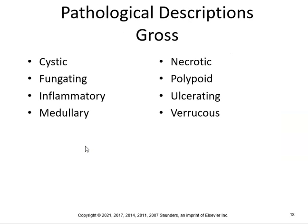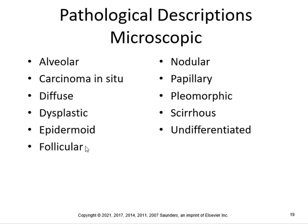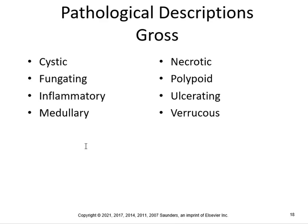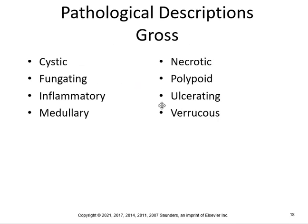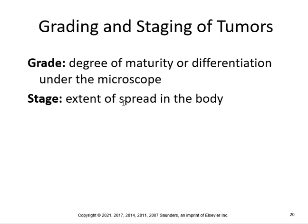Pathological descriptions can be gross — visible to the naked eye — such as cystic, fungating, inflammatory, medullary, necrotic, polypoid, ulcerating, or scirrhous. Microscopic descriptions include alveolar, carcinoma in situ, diffuse, dysplastic, epidermoid, follicular, nodular, capillary, serous, and undifferentiated. Know the categories: carcinoma in situ is microscopic, whereas gross descriptions include fungating, necrotic, and others.